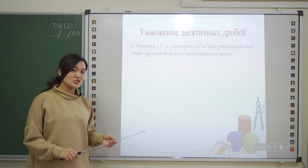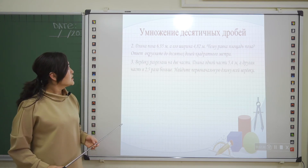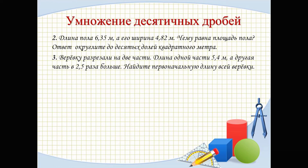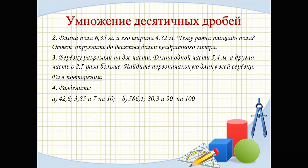Now you must solve similar problems on your own. The length of a floor is 6.35 metres and its width is 4.82 metres — find the area of the floor, rounding the answer to the nearest hundredth of a square metre. Third task: a rope was cut into two parts. One part is 5.4 metres long, the other is 2.5 times longer — find the original length of the whole rope. For review, divide 42.6, 3.85, and 7 by 10; and divide 586.1, 80.3, and 90 by 100.